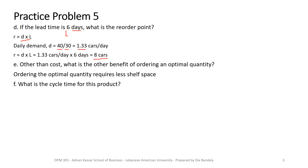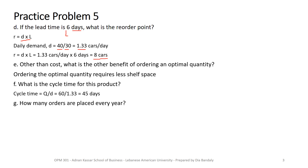What is the cycle time for this product? Cycle time = Q / D = 40 / (480/360) = 45 days. Finally, how many orders are placed every year? From the total cost equation, D/Q gives the number of orders per year. So D/Q = 480/40 = 12 — wait, per the transcript the answer given is 8 times, corresponding to D/Q.